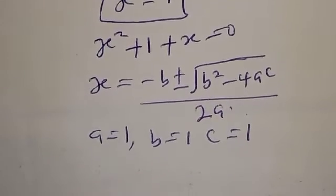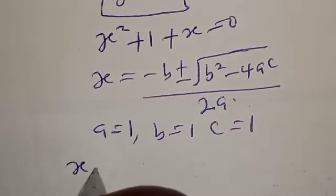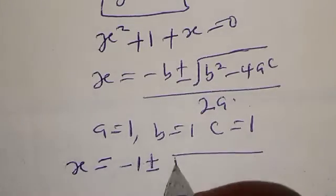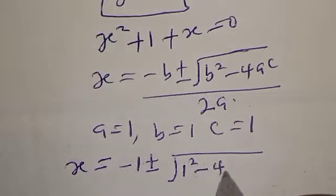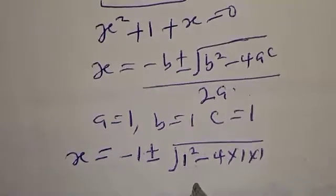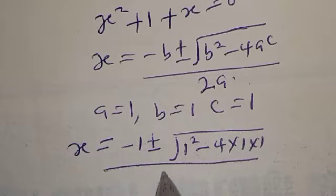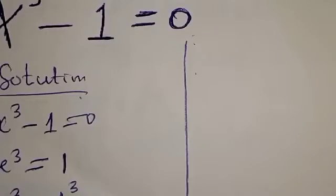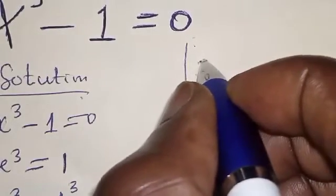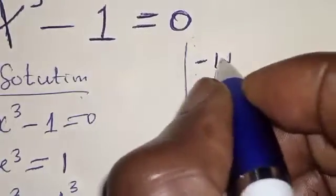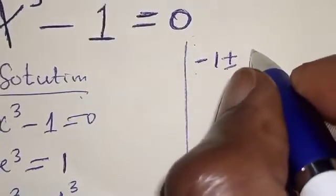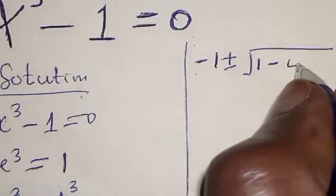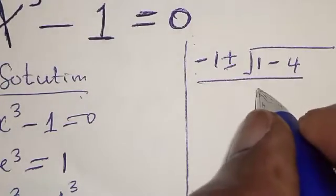Substituting into the quadratic formula, we have s equal to minus 1 plus or minus square root of 1² minus 4 times 1 times 1, over 2 times 1. Simplifying: 1 squared is 1, and 4 times 1 times 1 is 4, so we have minus 1 plus or minus square root of 1 minus 4, over 2.